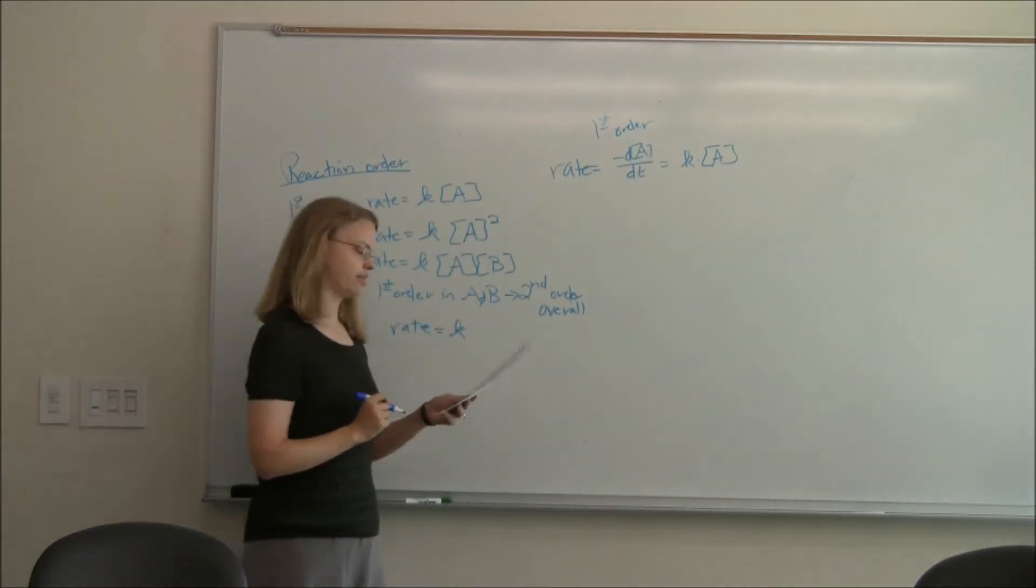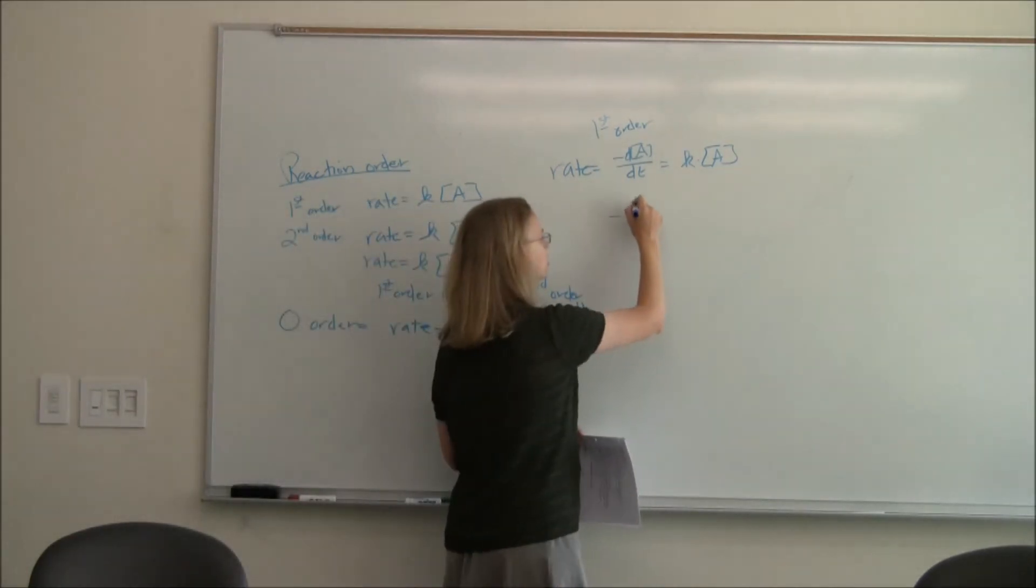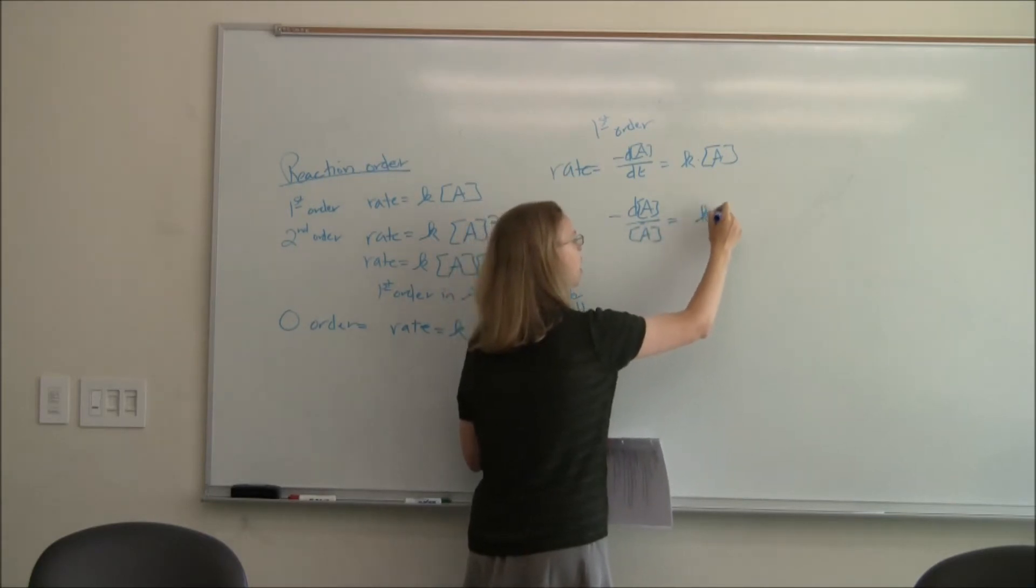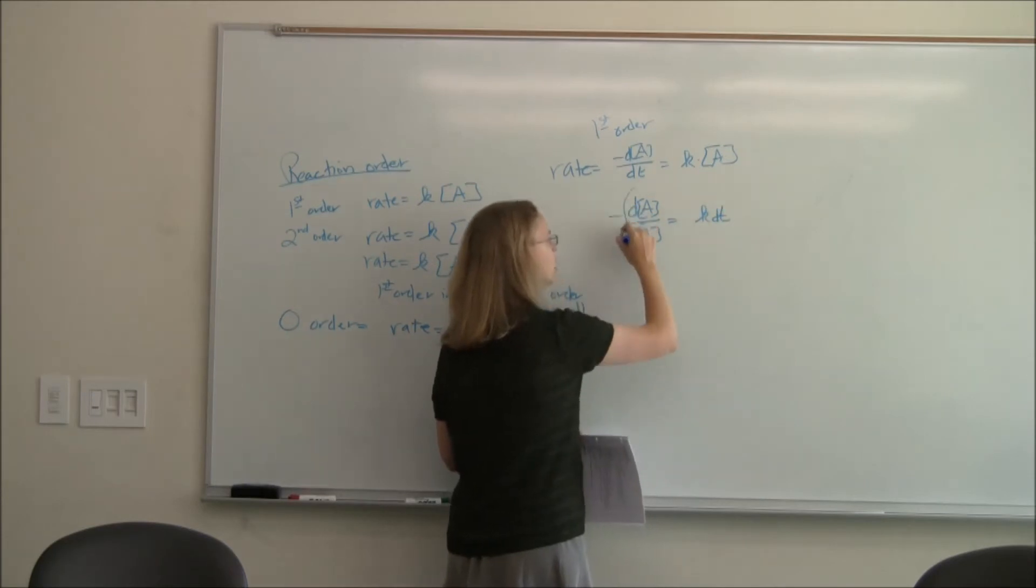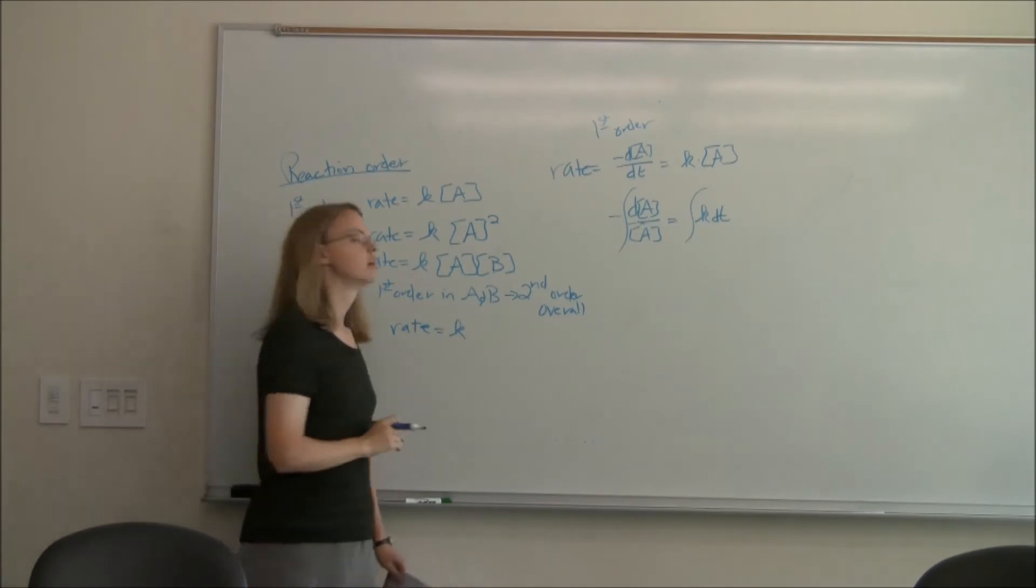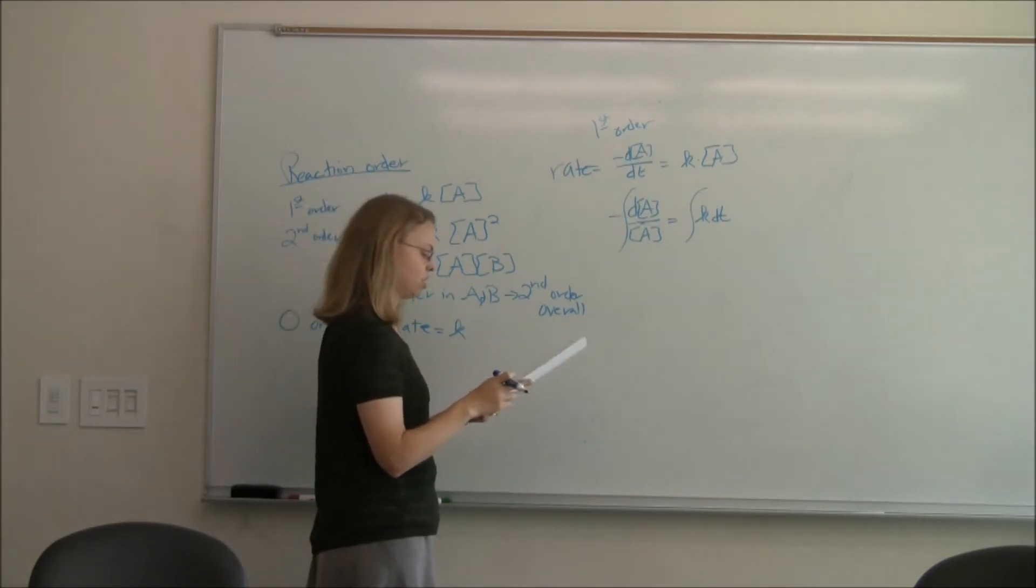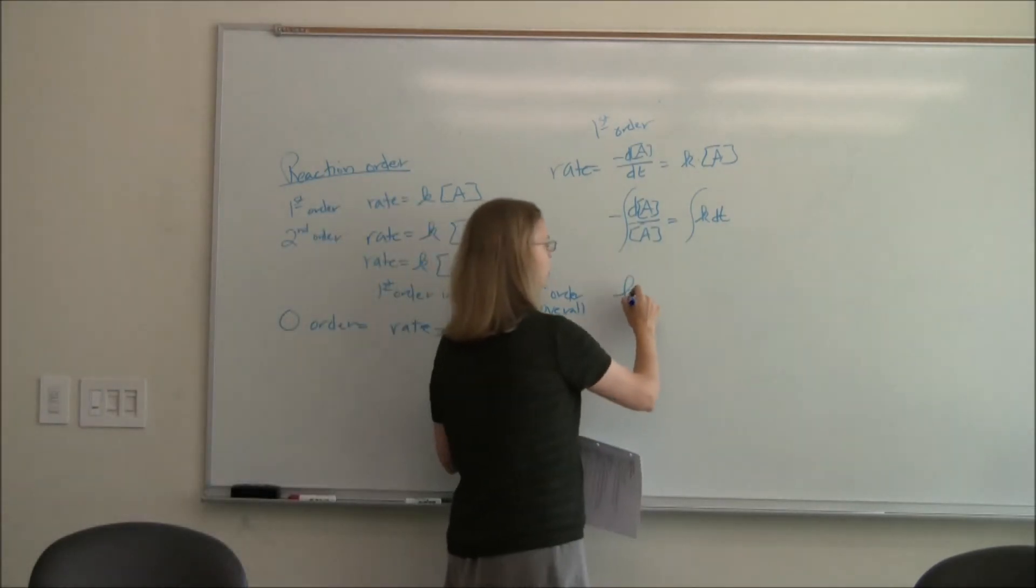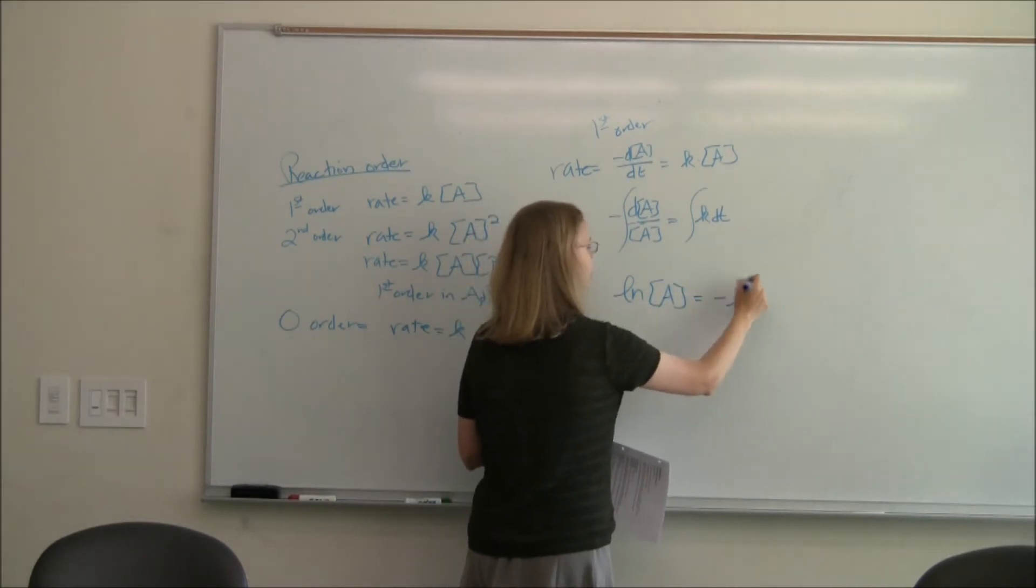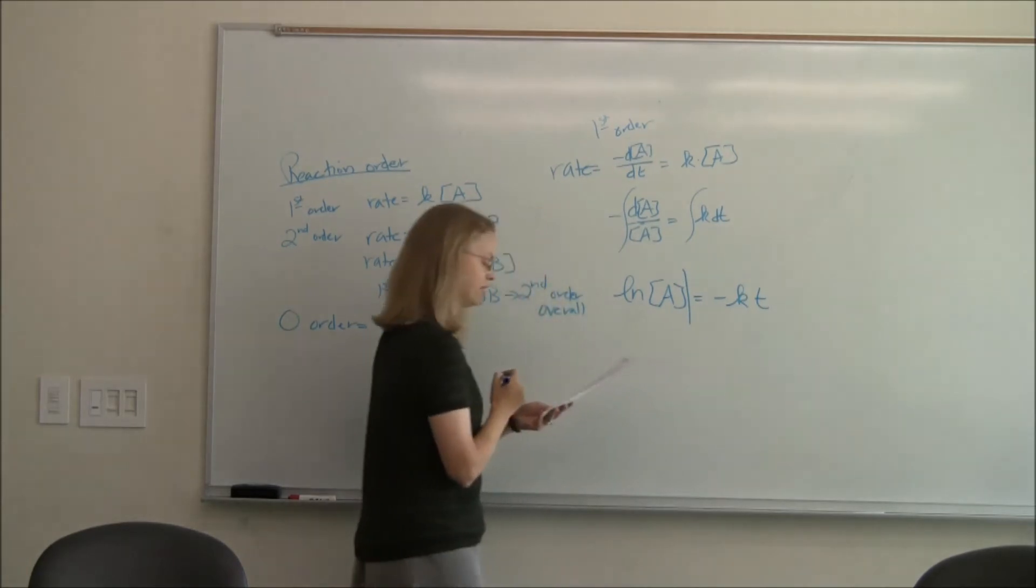So minus dA dt, then, is going to equal to k times A. Let's do the first order. And so then we have to solve that equation. So let's get it over like this. dA, I'm going to separate my variables. So over A is equal to k times dt. And I can then integrate these.